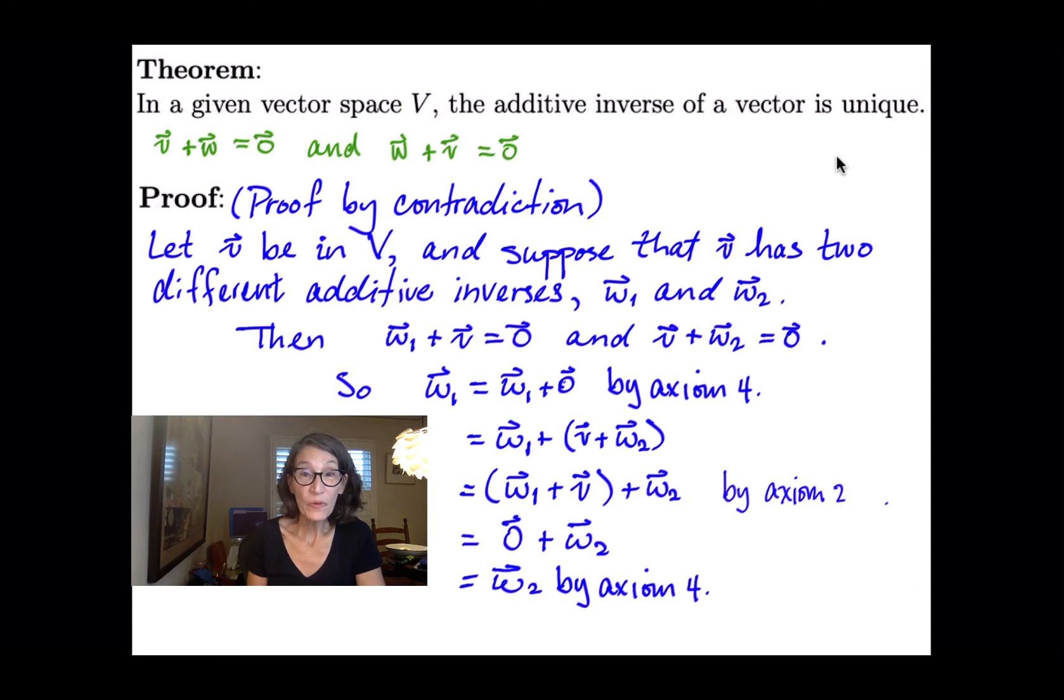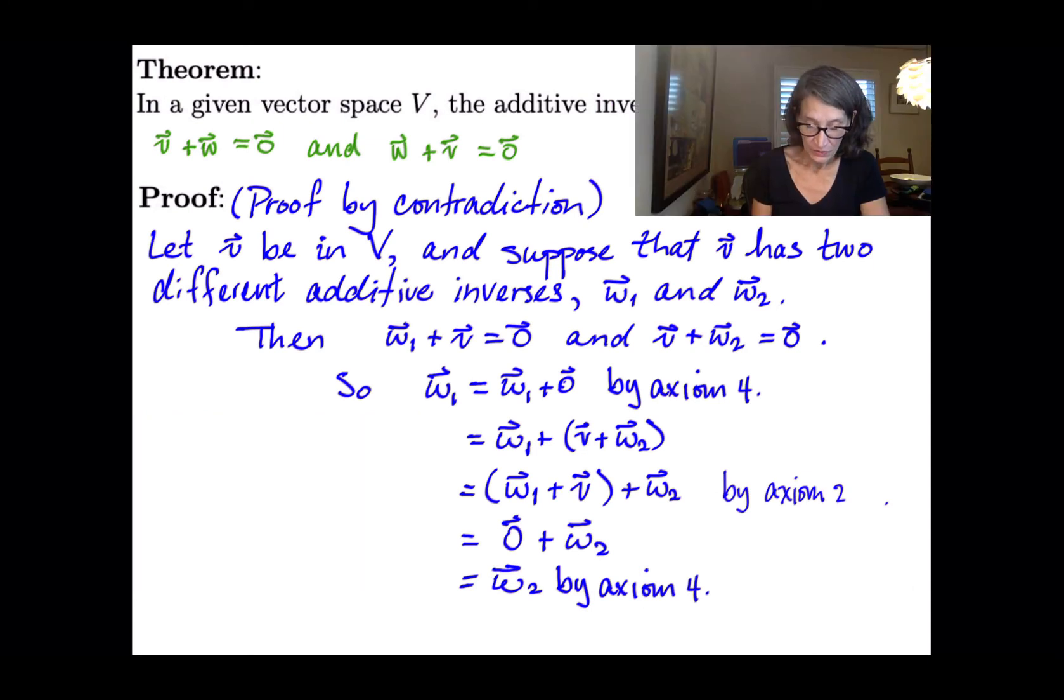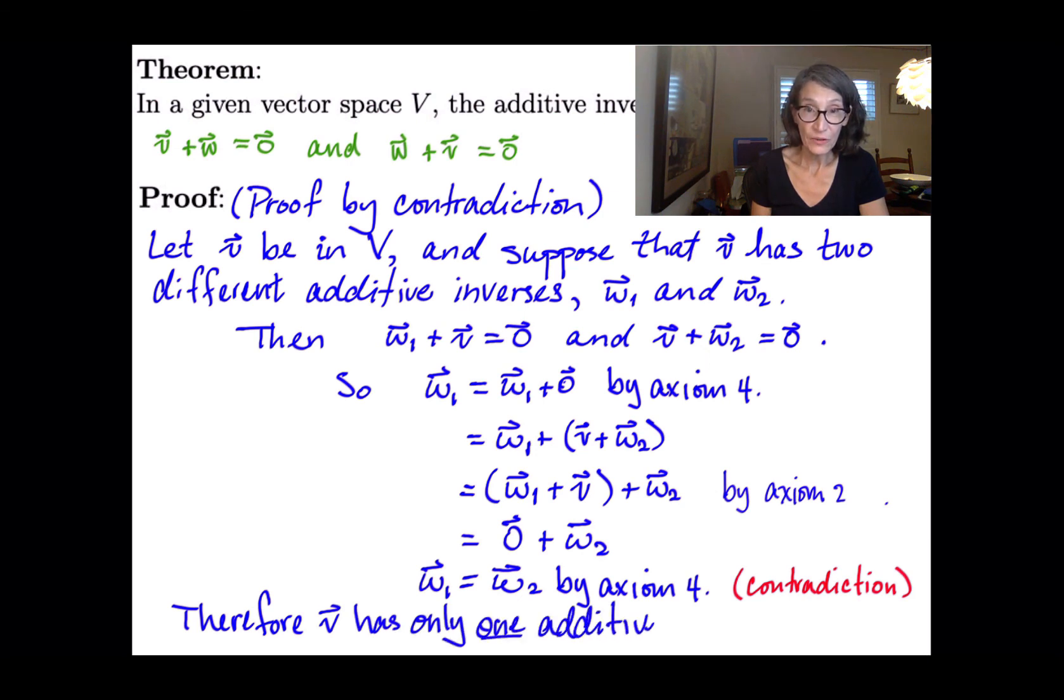So what we've just shown is that w1 is equal to w2. But our assumption was that they were different. So this is our contradiction. And therefore, we can conclude that the assumption was false, the assumption that v had two different additive inverses. So now we can conclude that v has only one additive inverse.